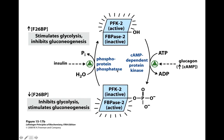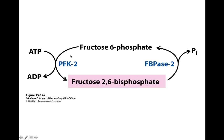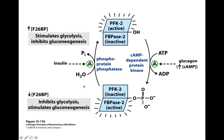Now let's look at the opposite. When blood glucose concentration is high, insulin is released. The kinase is no longer active, and instead we're going to have a phosphoprotein phosphatase active. The phosphatase removes the inorganic phosphate, so our FBPase2 phosphatase activity is now inactive, but our PFK2 is active. PFK2 — that isozyme — is going to make fructose 2,6-bisphosphate, which is going to stimulate glycolysis and inhibit gluconeogenesis. This pulls the entire process together.